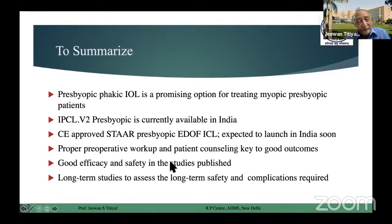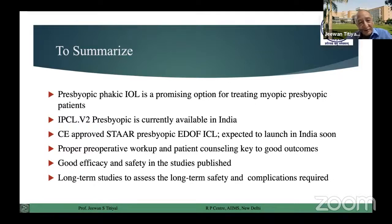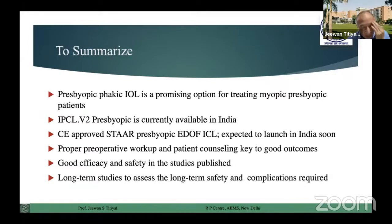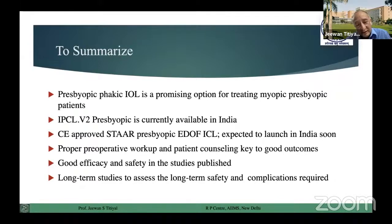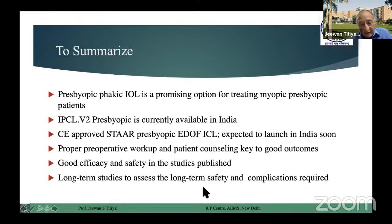To summarize: presbyopic phakic IOLs are a good option for a suitable patient with very good pre-op assessment — less internal aberration, DLI normal, and a better cornea. Whatever results we have seen with the IPCL, they do well; patients adapt very nicely. The only concern is that presbyopia is a dynamic process — we are not sure what will happen after five years of implantation. I'm awaiting that period; some of my patients are reaching five years now. One patient I had to add correction for near — the lens was clear. But I'm pretty sure with the refractive-refractive design, patients will get adapted for a range from five to ten years also. Complications are very, very less; I have yet to see any patient develop glaucoma in this age group. Only cataract is a major problem.